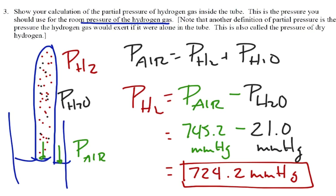Now the saying is that if these little red dots here, if these were alone inside this tube, the pressure would be 724.2. So this is the partial pressure of hydrogen, which is the pressure that the hydrogen would exert if it were by itself inside that tube, 724.2. So we're going to use that in our PV over T equals PV over T calculation.